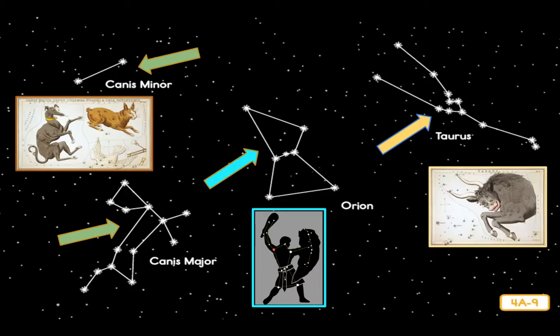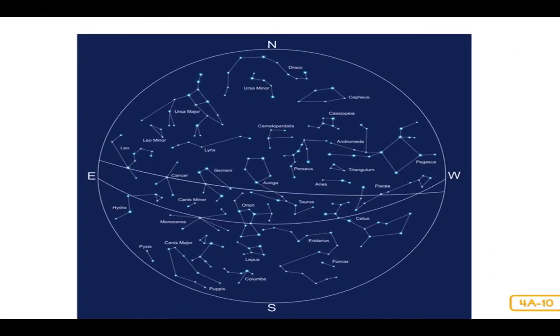There are 88 major constellations, and most people around the world use the same basic list. When these constellations were first named, most ancient people could only guess what stars actually were. But we have learned that there is much more to space than meets the eye. In fact, sometimes when we look into outer space, our eyes can play tricks on us.